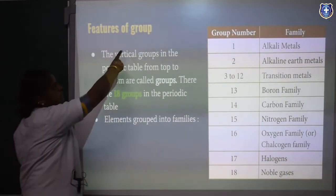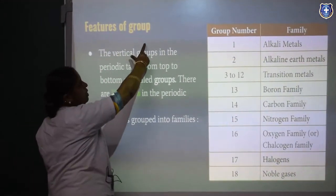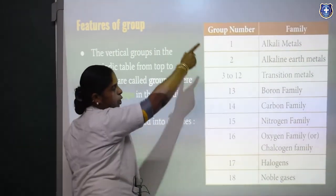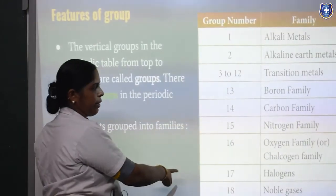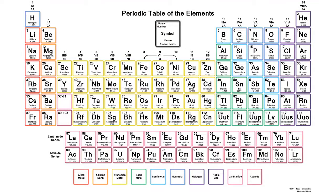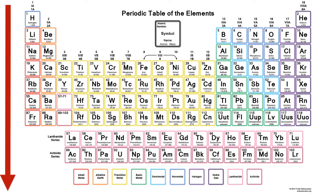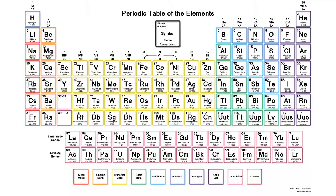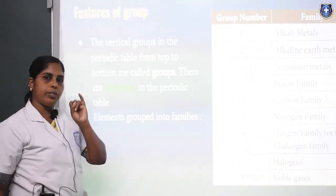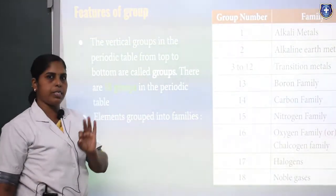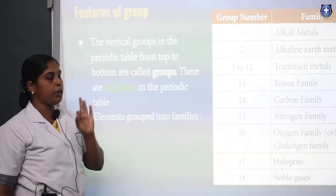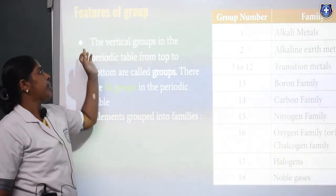Now let's see the features of groups. The vertical columns are known as groups in a periodic table. There are 18 groups in the modern periodic table. The horizontal rows are periods; the vertical columns are groups.